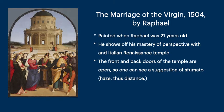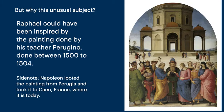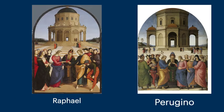This next image takes a little bit of an explanation. It's by Raphael — The Marriage of the Virgin. It was painted when Raphael was only 21 years old. Already he shows his mastery of perspective and his ability to convey an Italian Renaissance temple. The front and back doors of the temple are open so that you can see a little bit of the sfumato, or the haze, in the distance. This is a very unusual subject. Raphael could have been inspired by the painting done by his teacher Perugino, done between 1500 to 1504.